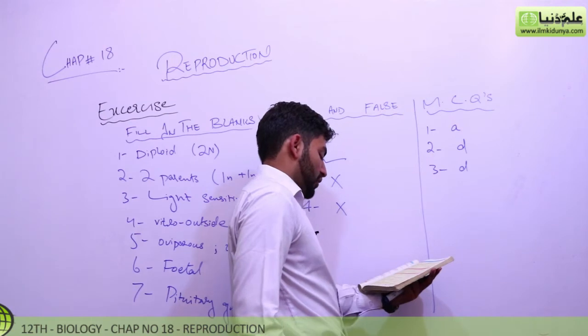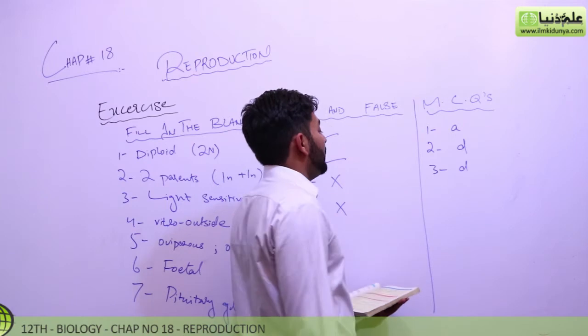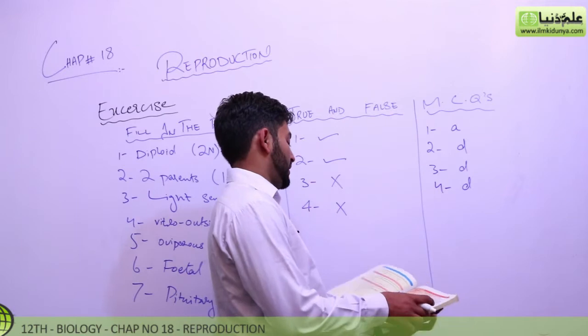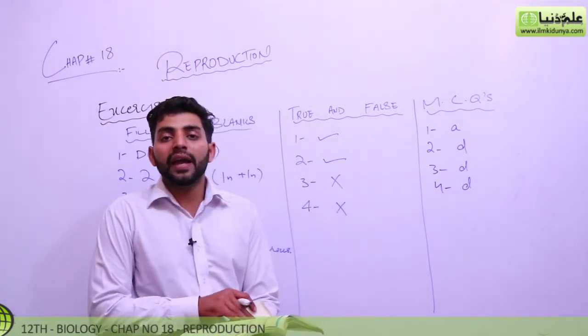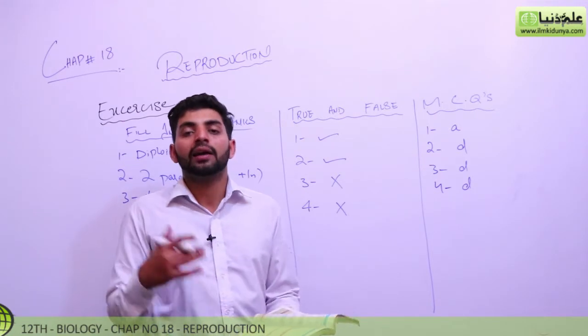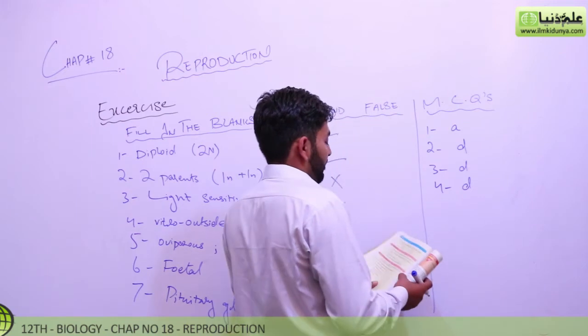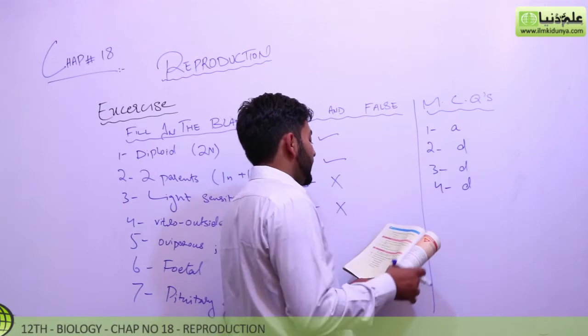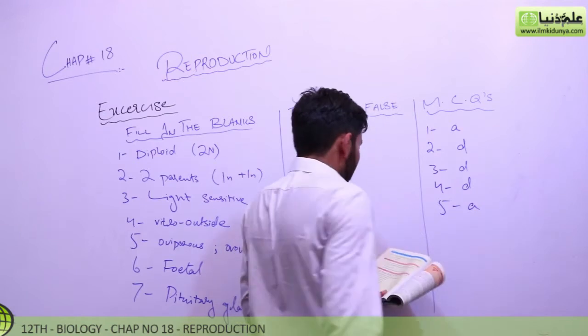Then he asks, the common methods of asexual reproduction are tissue culturing, identical twins, cloning, or all A, B, and C. So answer is D again.